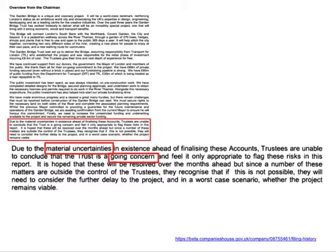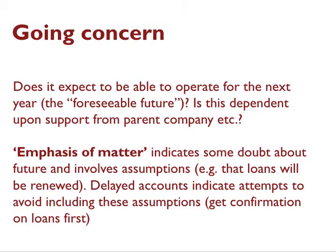What do these words mean and why are they important? Going concern basically refers to the likelihood that a company or organisation is going to be able to continue to operate for the next year or so — what might be called the foreseeable future. If everything looks fine and the money is going to keep coming in with no anticipated problems, the accountants will say they are happy that this company can continue to operate as a going concern. However, sometimes accountants will say there are doubts, and those doubts can vary in strength. In some cases they might say it's reliant on support from a parent company.